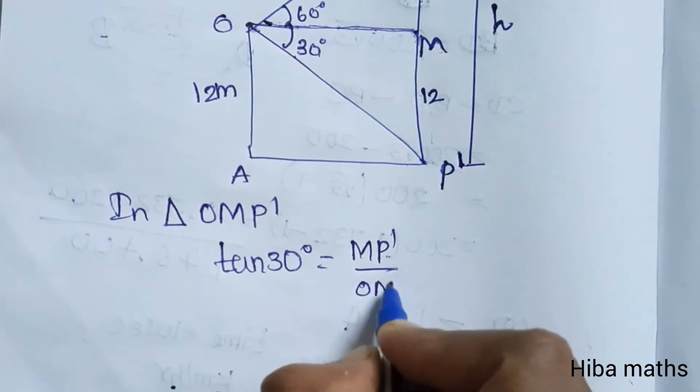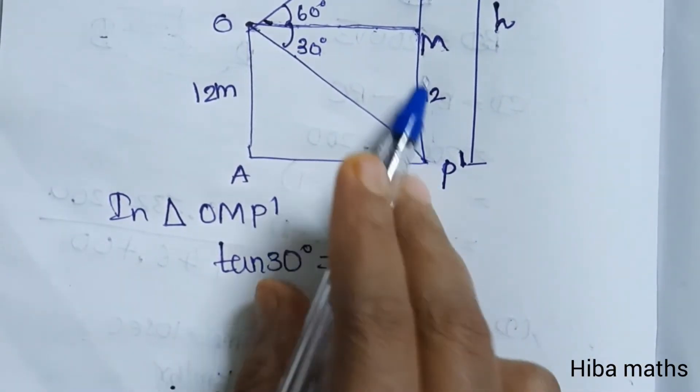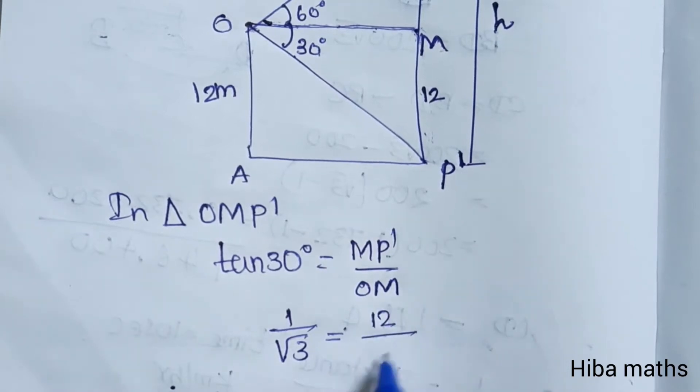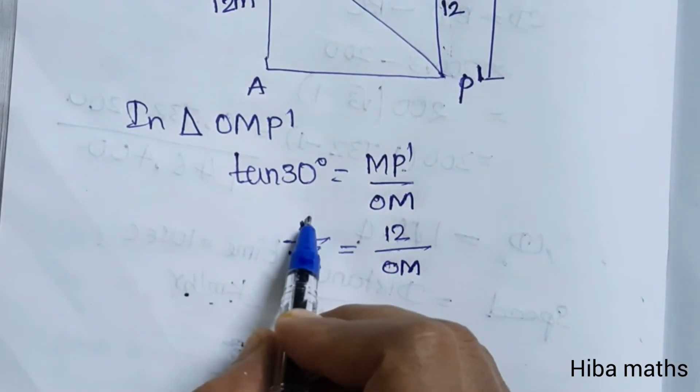Tan 30 is 1 by root 3, which is equal to MP' value 12 by OM. So OM is equal to 12 root 3. This is the first result.